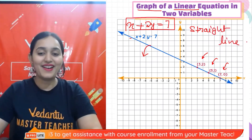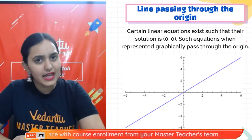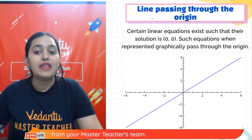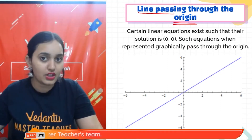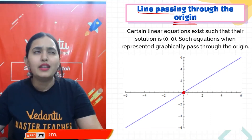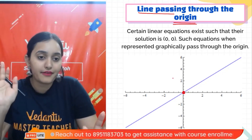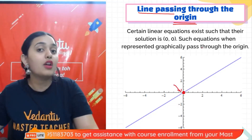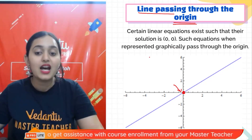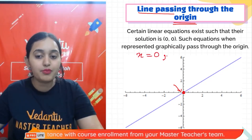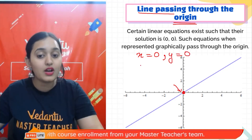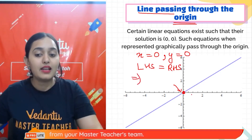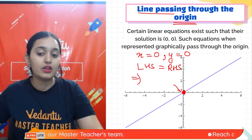In some scenarios, the graph of a linear equation passes through the origin — that is, the point (0, 0). If you want to check whether the graph passes through the origin without plotting, simply substitute x = 0 and y = 0 into the equation. If LHS equals RHS, the graph will pass through the origin.